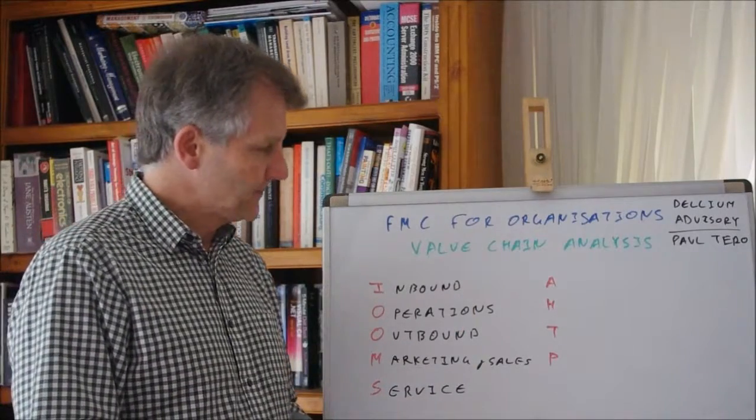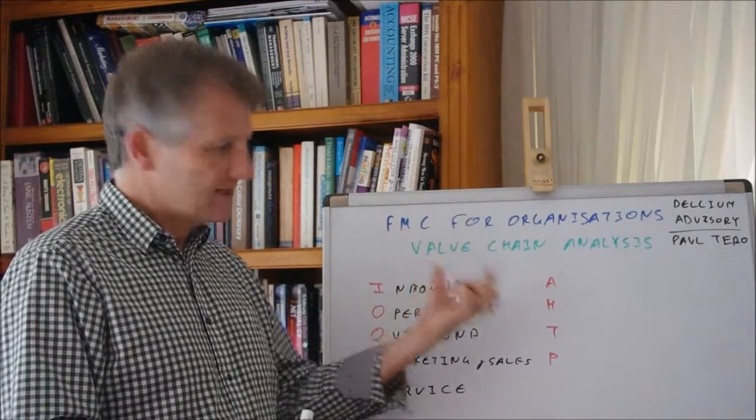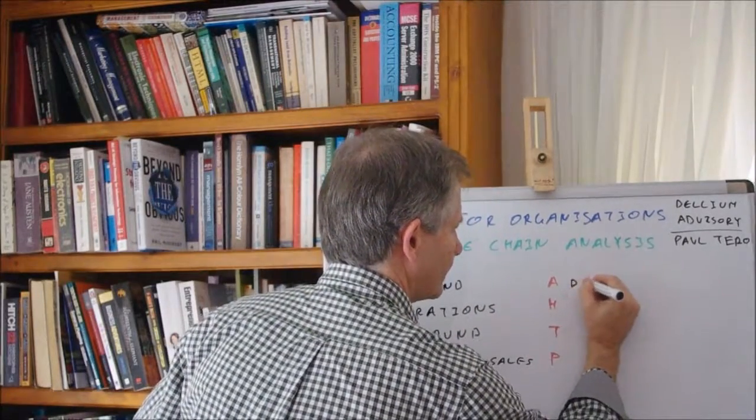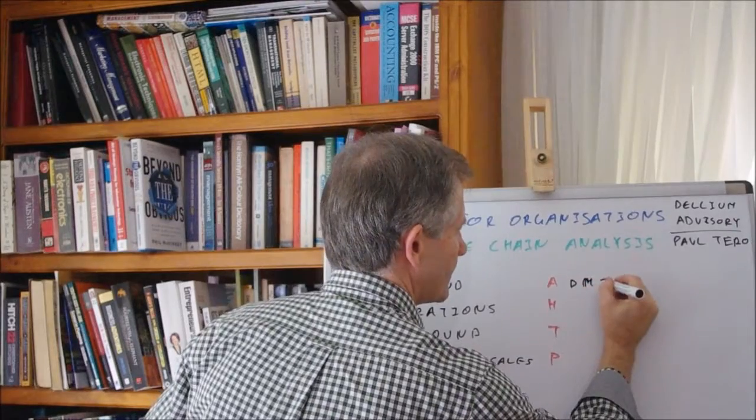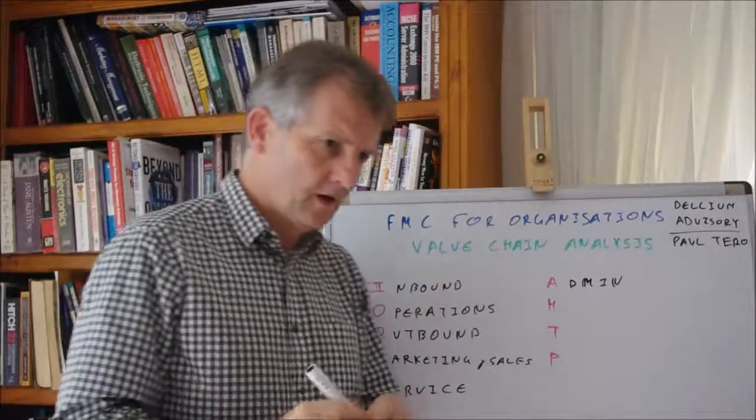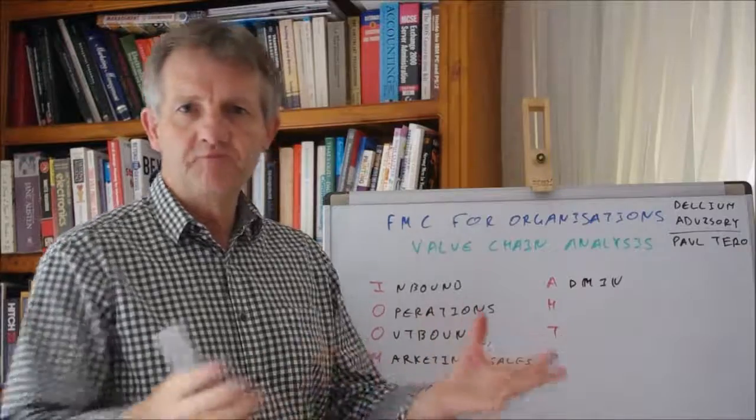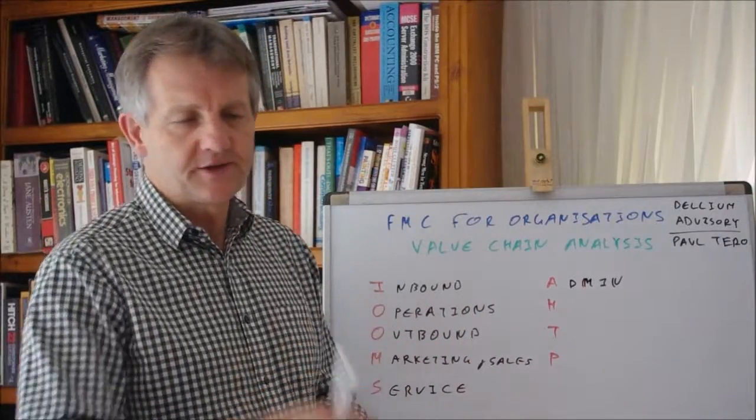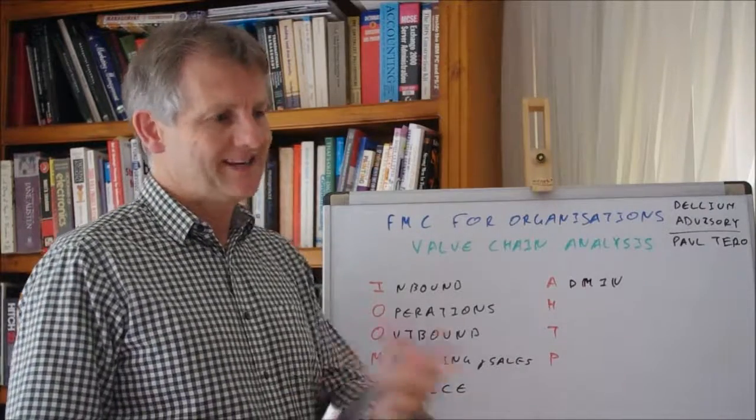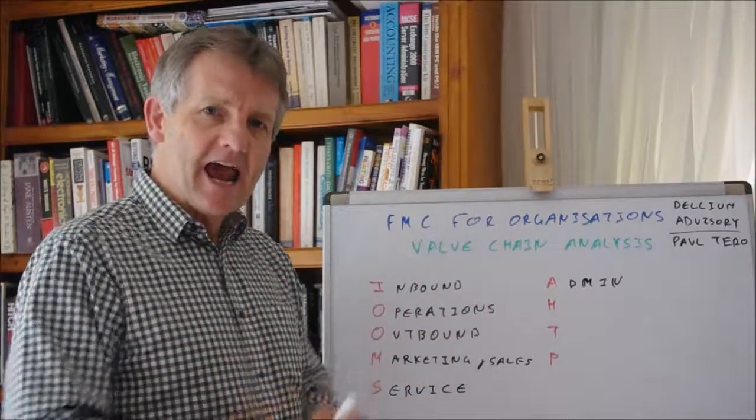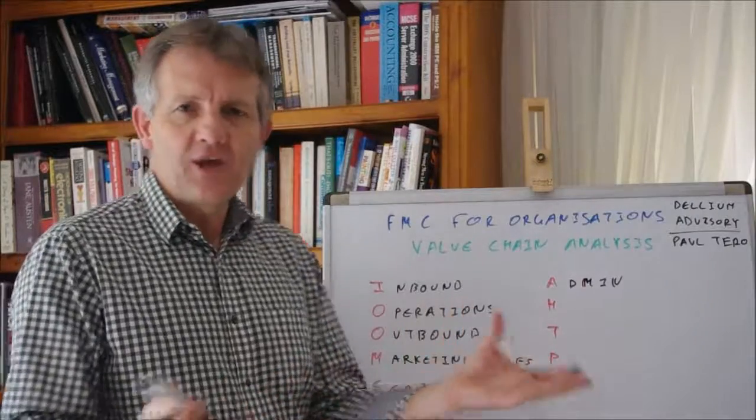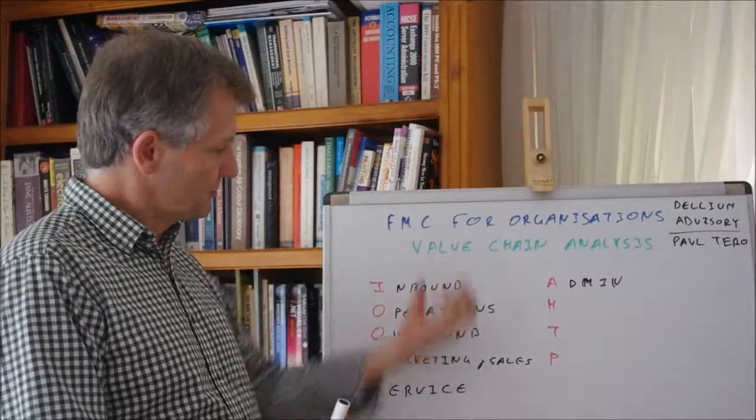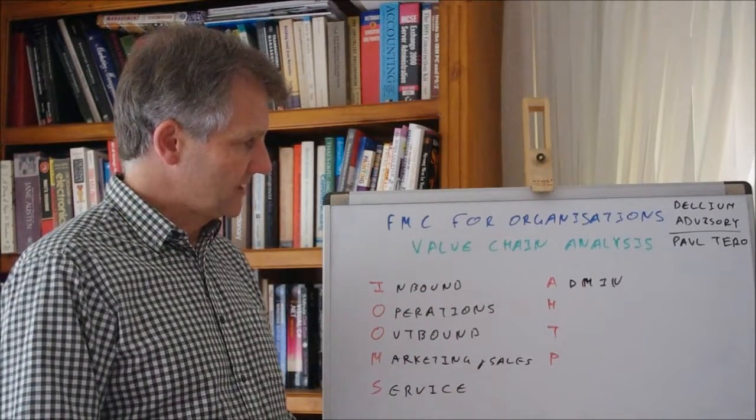The first of these secondary support operations is the admin. We're talking about the office or factory space, procedures, IT, governance - all those necessary administrative or organizational infrastructure activities that go into the support of this primary part of the value chain.